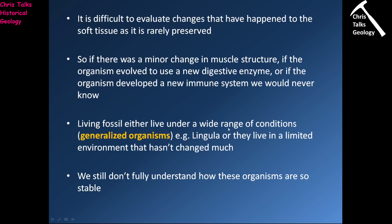Living fossils either live under a wide range of conditions — in which case they're considered generalized organisms, well adapted to a whole range of different conditions. A good example is Lingula, which can pretty much live along most coastlines. However, there are also situations where a living fossil is so specialized to its environment that it couldn't possibly exist in any other environment. One of the things we have trouble with is we don't actually understand how they're so stable, because no environment stays the same forever — there will always be changes. We would expect to see small changes but we don't, and trying to explain that is a problem we haven't managed to overcome in many cases.